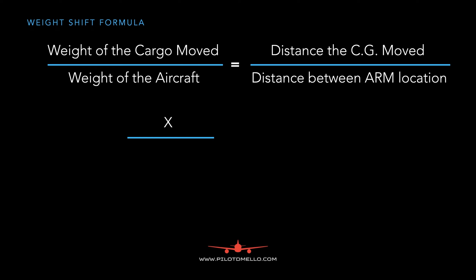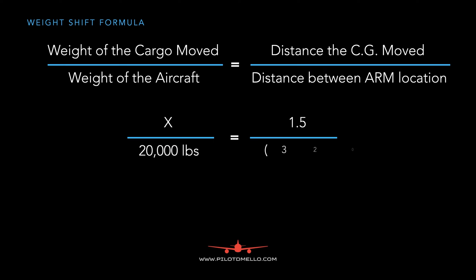What is the weight of the cargo moved? That is the unknown, so we can place an X divided by the weight of the aircraft — 20,000 pounds — equals the distance the center of gravity moved. We're currently 1.5 inches forward of the forward limit, divided by the distance between the two cargo locations: 320 minus 180.